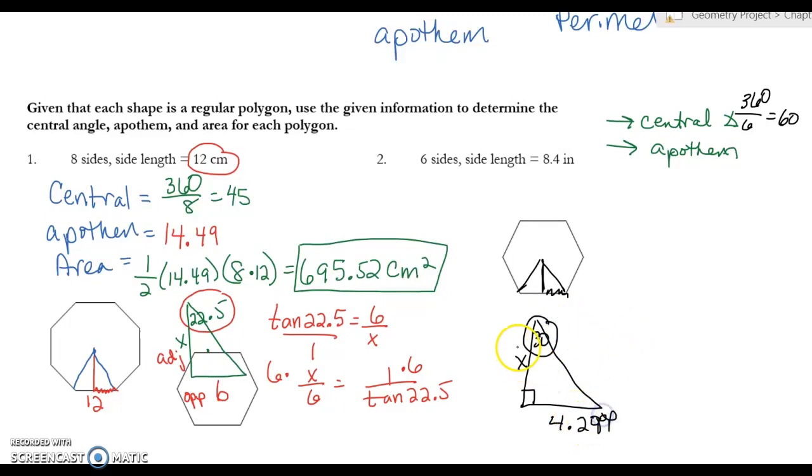So it's going to be the tangent of 30 is equal to opposite over adjacent. I'm going to flip those upside down, and then now I'm going to multiply both sides by 4.2. And so now I get 4.2 on top divided by the tangent of 30, and that is 7.27. So my apothem is 7.27.